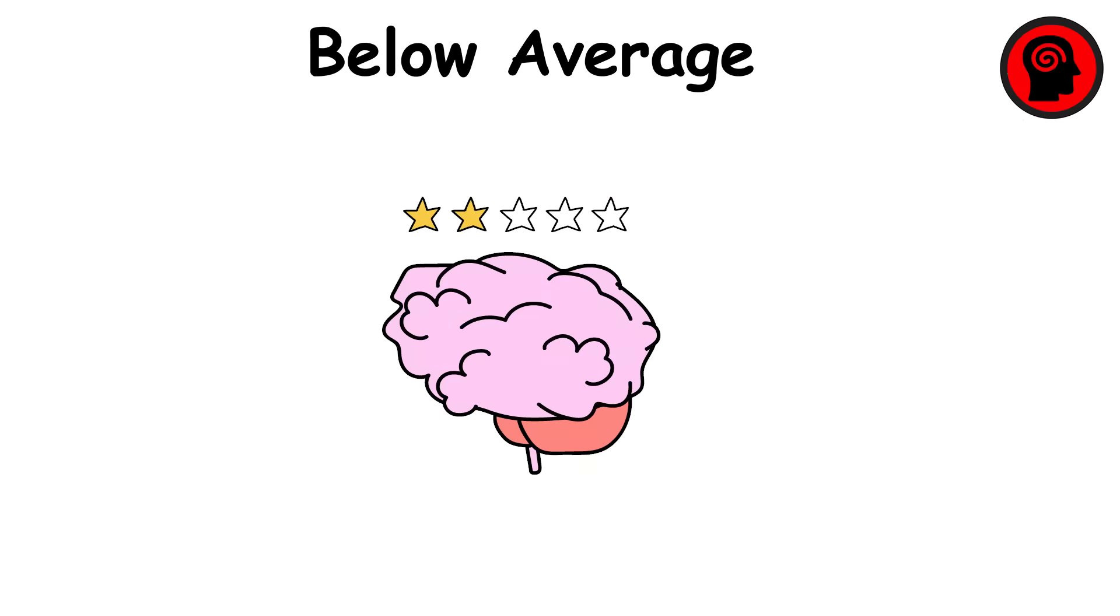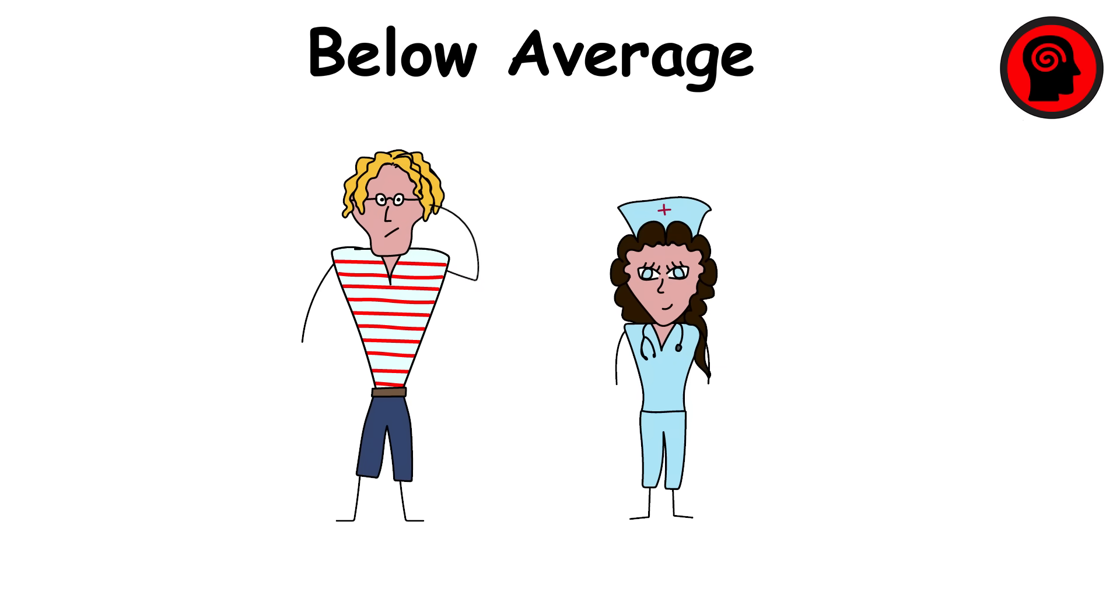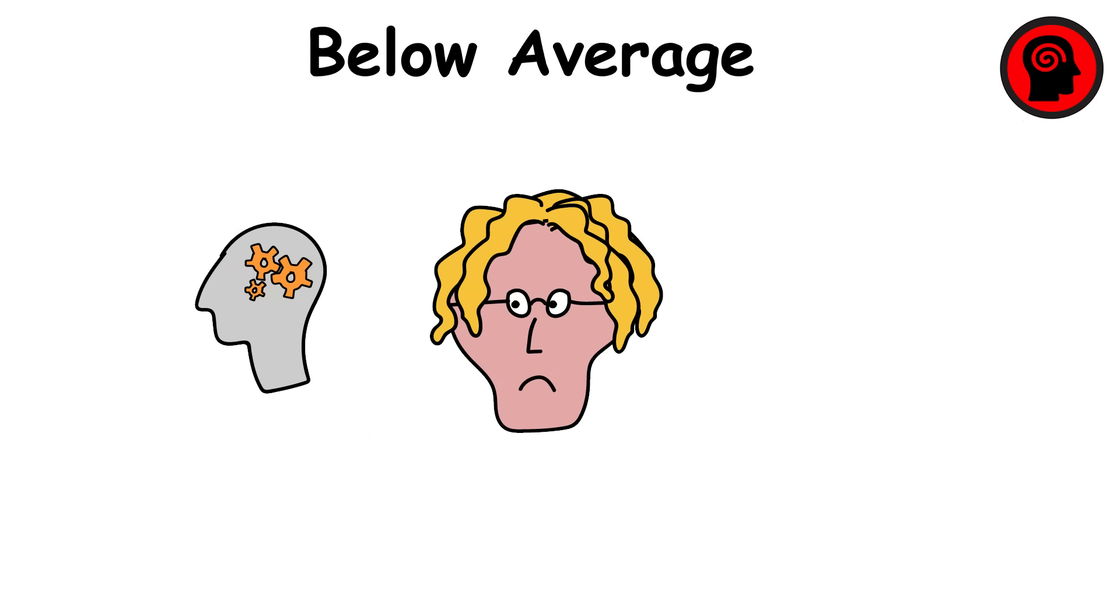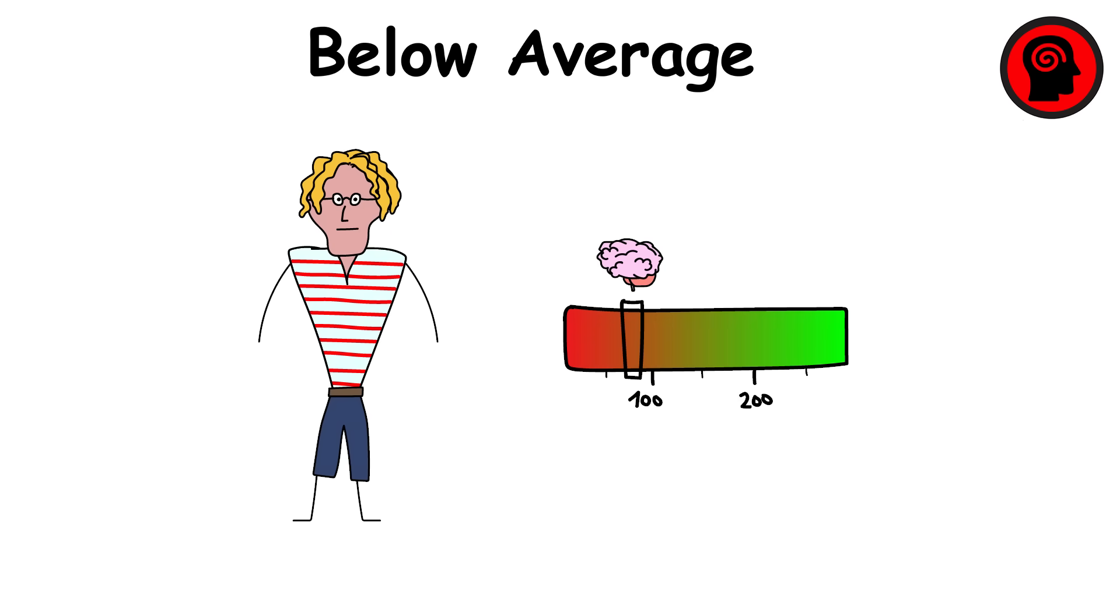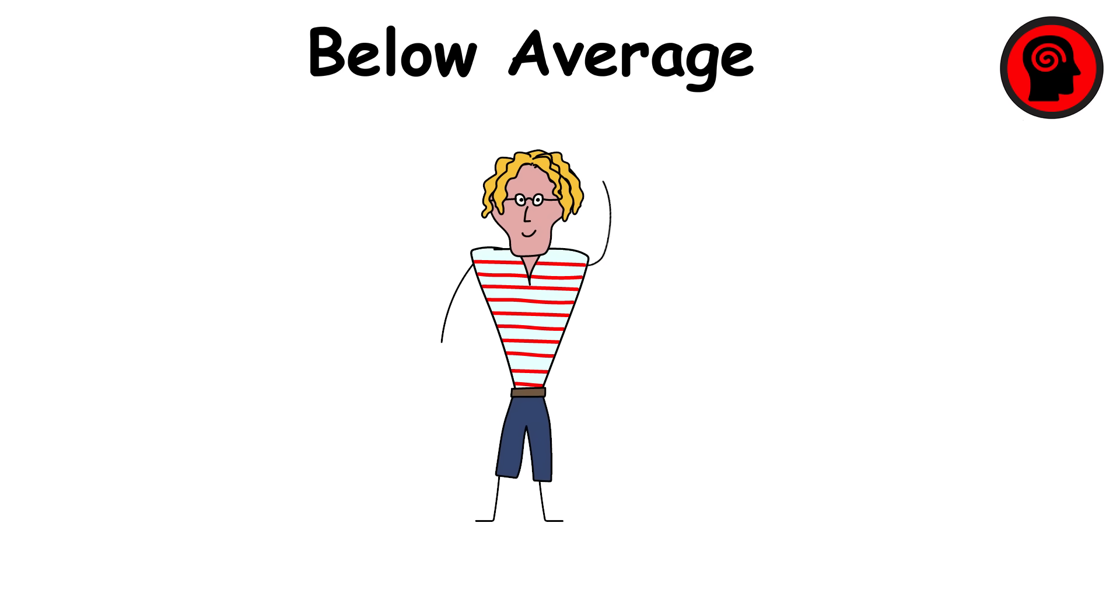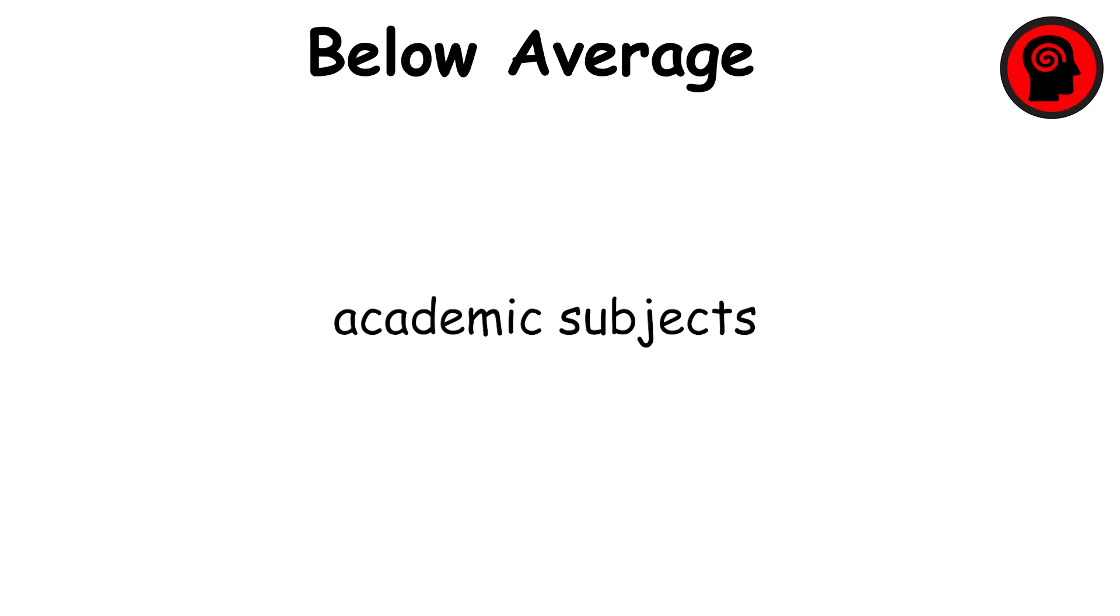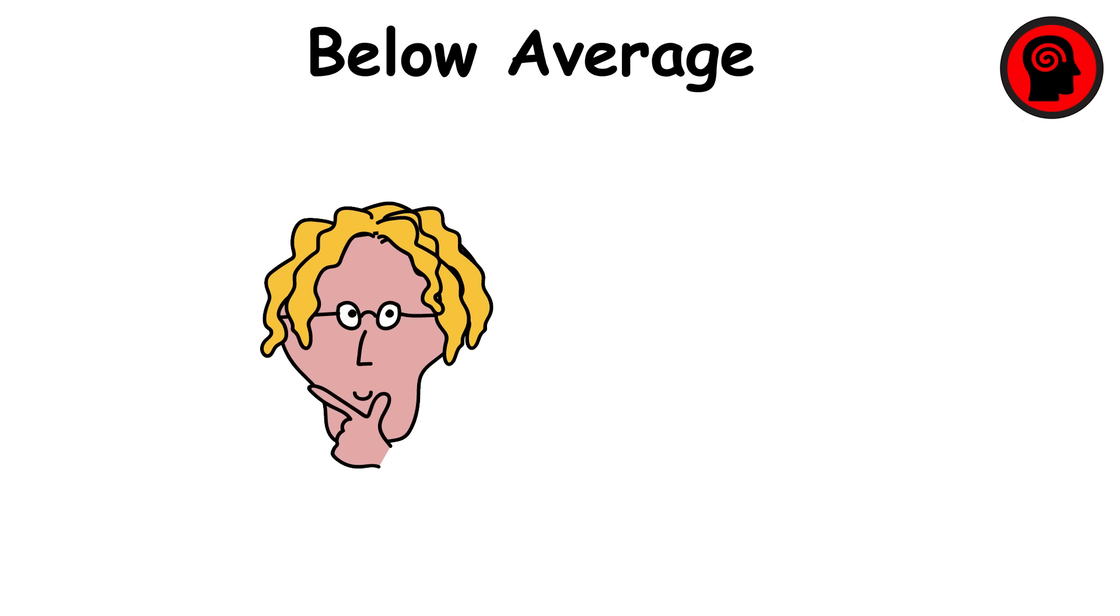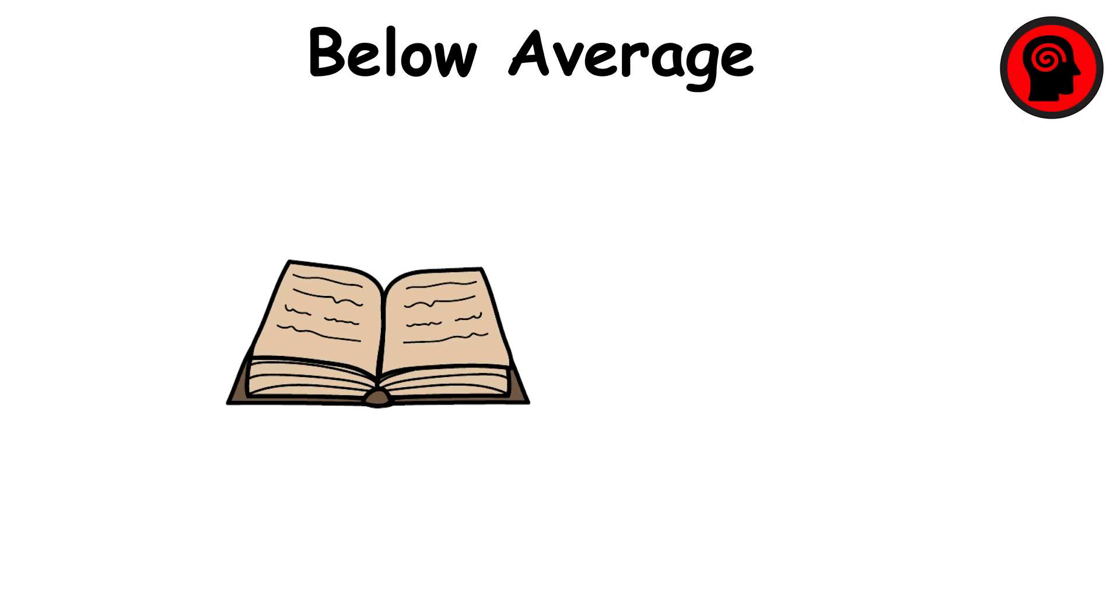Below average intelligence includes individuals who can function independently, but tend to struggle with complex reasoning or abstract thinking. IQ scores typically range from 70 to 85. People in this group may find academic subjects like math, science, or grammar difficult, and they often learn better through repetition and hands-on activities than through theory or abstract instruction.